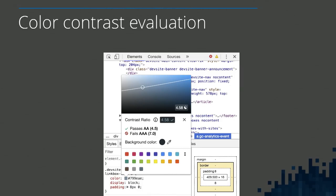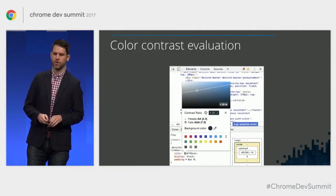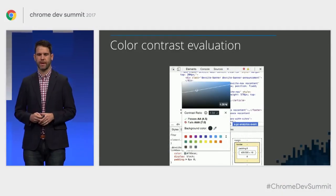Next up, we have a new experiment about to ship for color contrast. The line in the swatch is coming down giving you an idea of — on one side of the line, the contrast is good; on the other side, it's bad. As you move around and select colors, it's going to give you feedback and tell you if you're hitting certain thresholds. You can select the background color and get a preview right there. Please do give this a shot and give us your feedback.